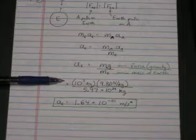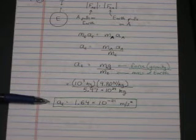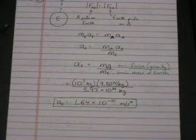So, we plug in the numbers, and we get the acceleration of the Earth is a very small 1.64 times 10 to the negative 21 meters per second squared.